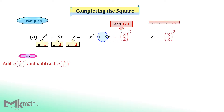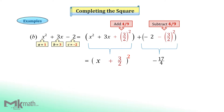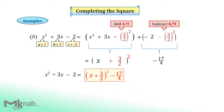Add 3 halves squared and subtract the same value. Now make the square form for the first bracket group. Take x from the first term and take positive 3 halves from the last term. Then simplify the second bracket group: minus 2 minus 9 over 4, which is negative 17 over 4. So the vertex form becomes x plus 3 halves squared minus 17 over 4.